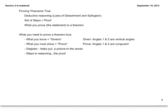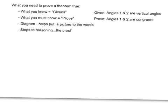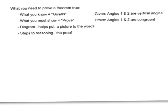Now, let's talk about proving theorems true. Proving theorems true requires a few things. We need deductive reasoning, which includes our laws of detachment and syllogism that we learned in one of the previous lessons. It also requires showing a set of steps, and that is what we call a proof. What you need to know to prove that theorems are true is you need to know what you know, which we call givens. These are things that we know at the beginning of the problem. We also need to show what we want to prove. A lot of times, a diagram helps put a picture to our words, and then we list the steps to our reasoning, which are called a proof.